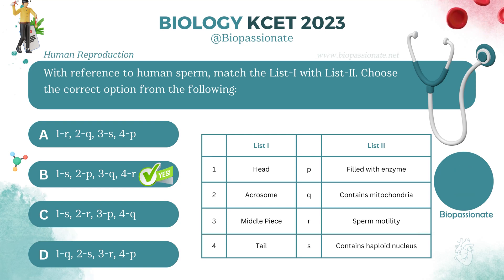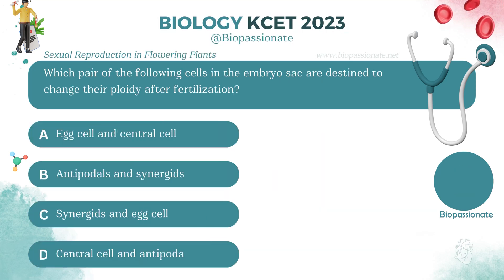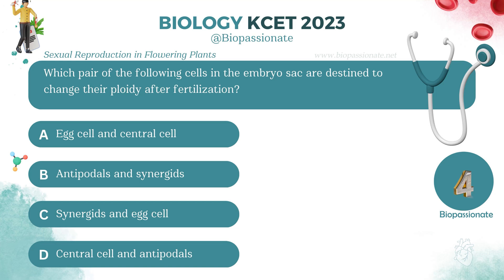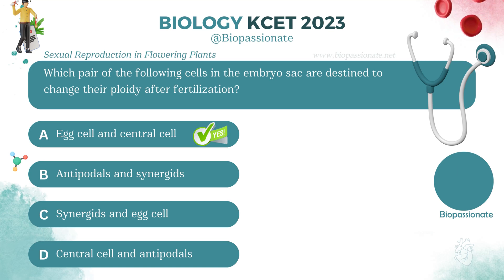Which pair of the following cells in the embryo sac change their ploidy after fertilization? Answer: Egg cell and central cell.